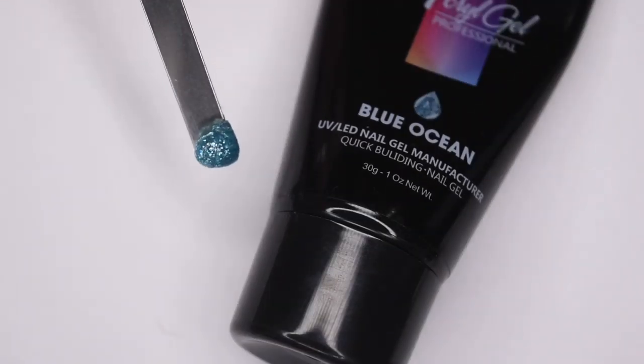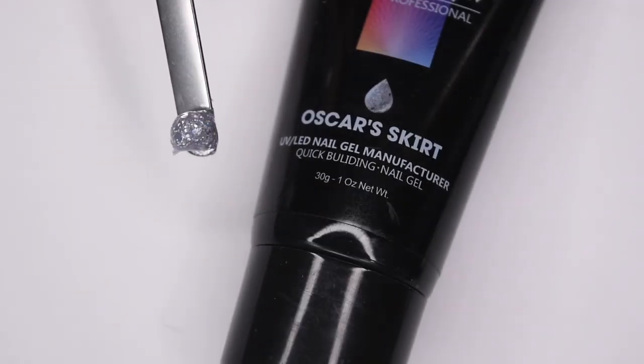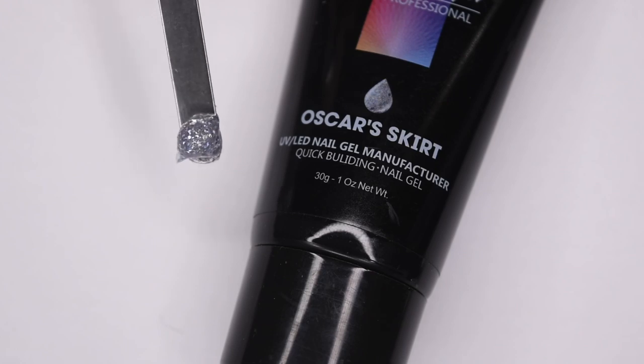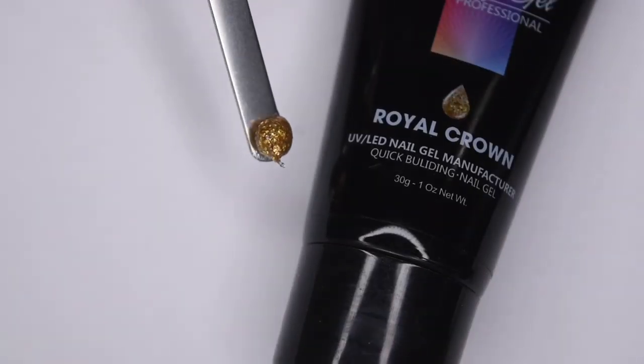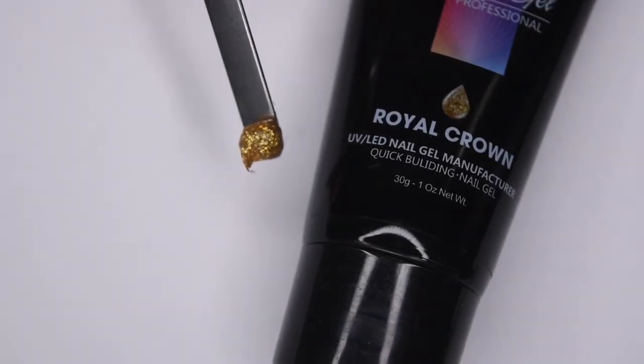Blue Ocean, which is a light blue, almost teal glitter polygel, Oscar's Skirt, a silver holographic glitter polygel, and actually the one I featured in this video, and lastly, Royal Crown, which is a gold glitter polygel.